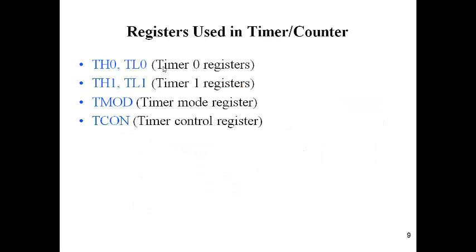The registers used in timer or counter: TH0, TL0, TH1, TL1. Timer is 16 bit, so we split it into two 8-bit parts. Lower 8 bit is treated as TL and higher 8 bit is treated as TH. Based on timer 0 or 1, we have TH0 or TH1, TL0 or TL1.